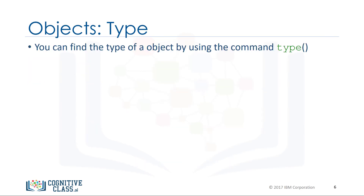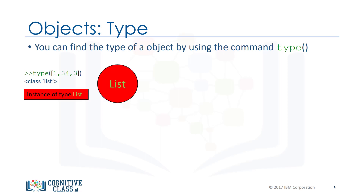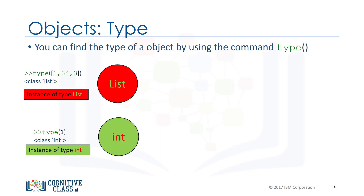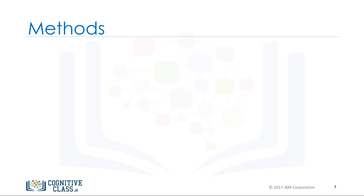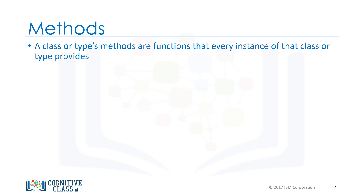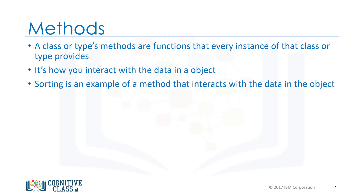We can find out the type of an object by using the type command. In this case we have an object of type list, an object of type integer, an object of type string, and an object of type dictionary. A class or type's methods are functions that every instance of that class or type provides — it's how you interact with the object. We have been using methods all this time, for example on lists.